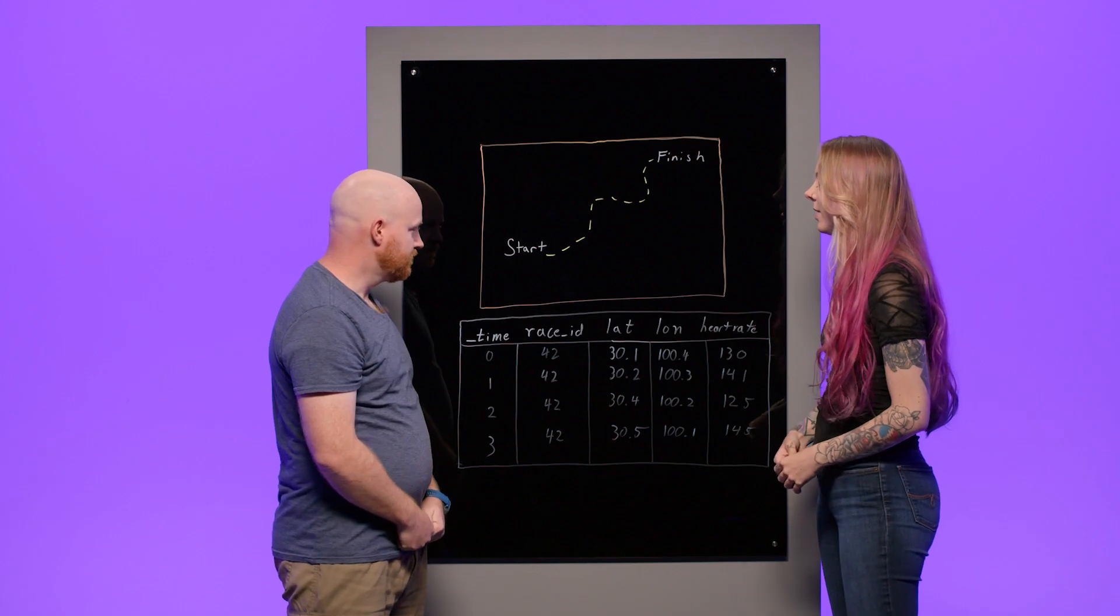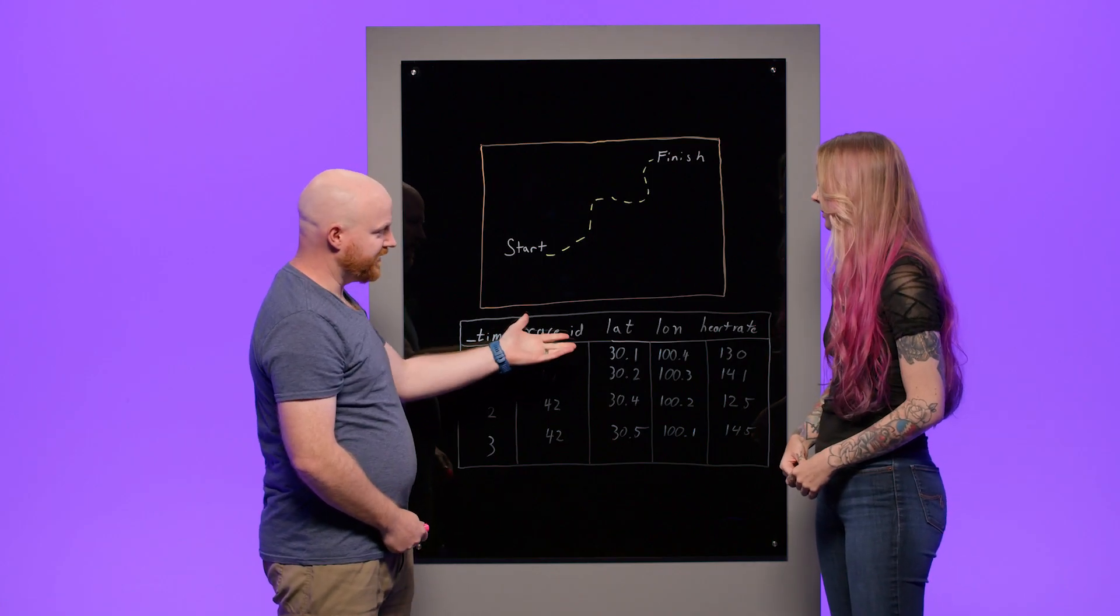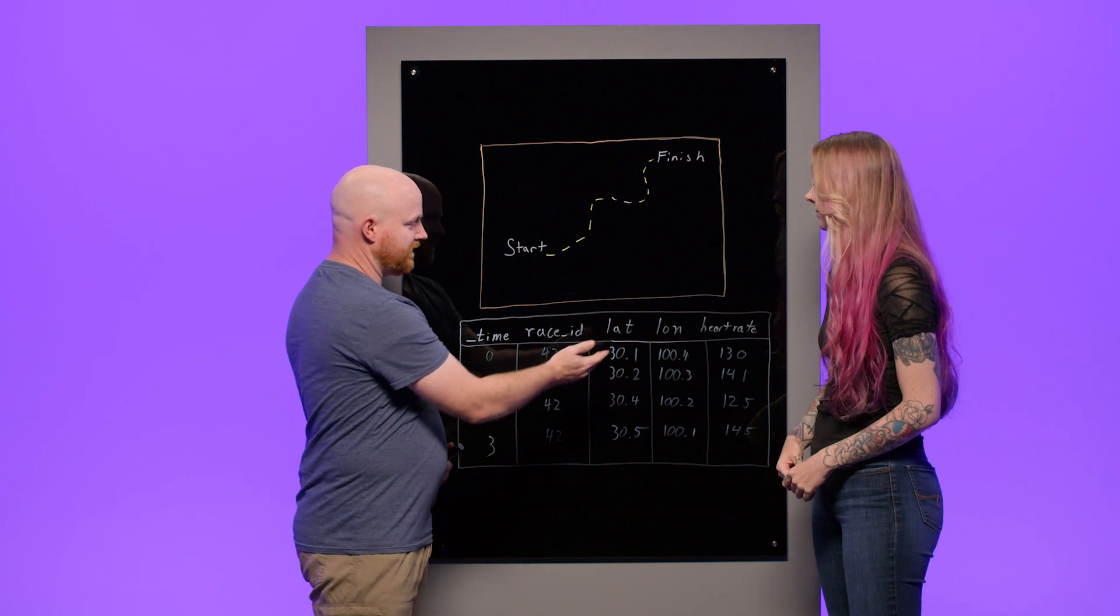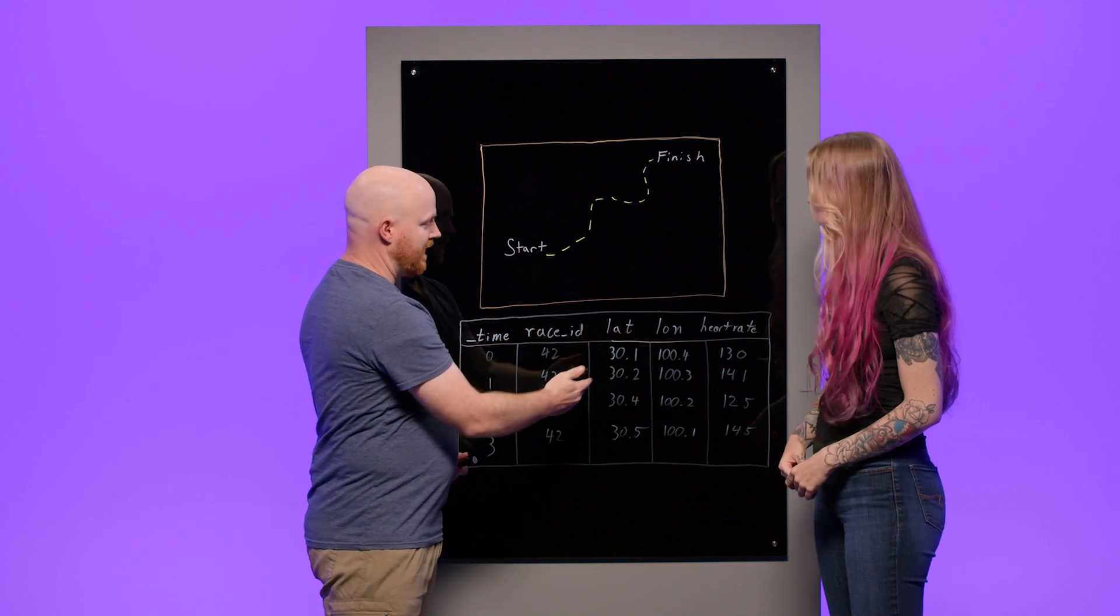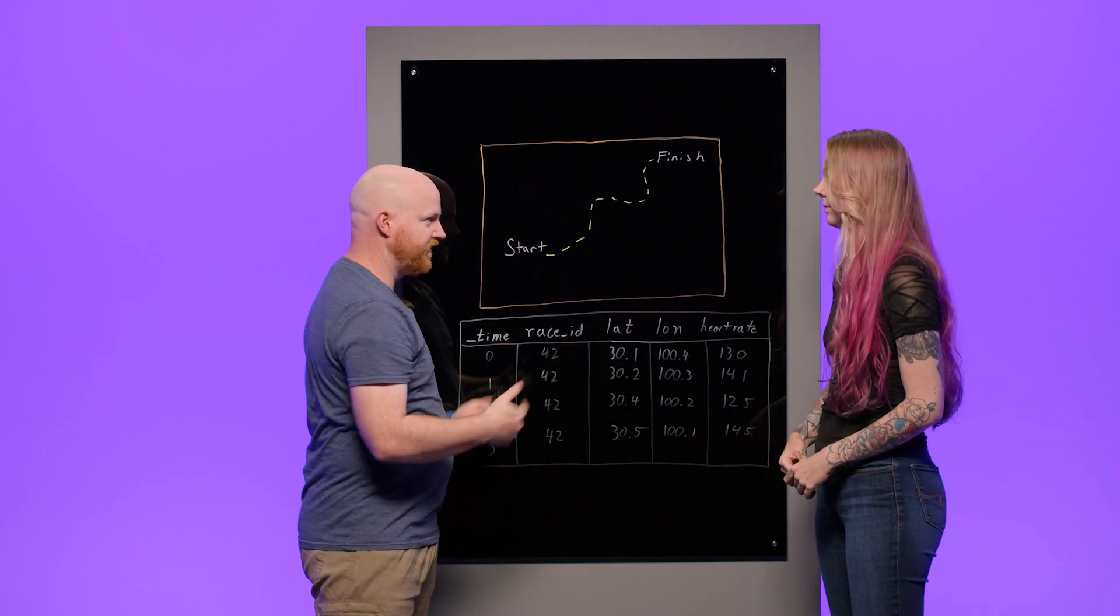And what does this data look like? Typically we put it out in a table like this, and you get latitude data and longitude data. We use lat and long as abbreviations for those.